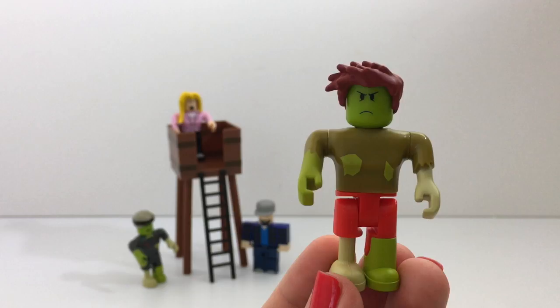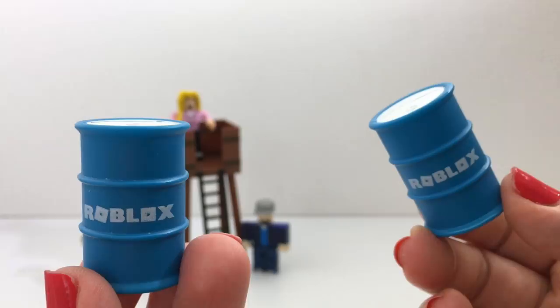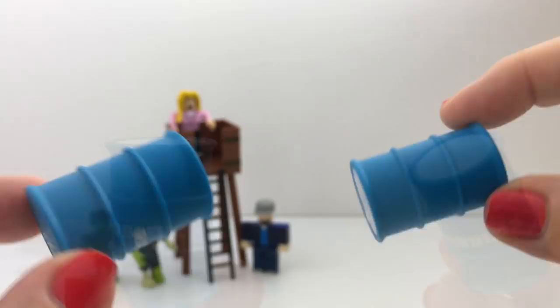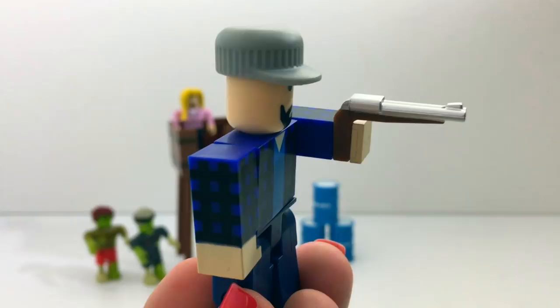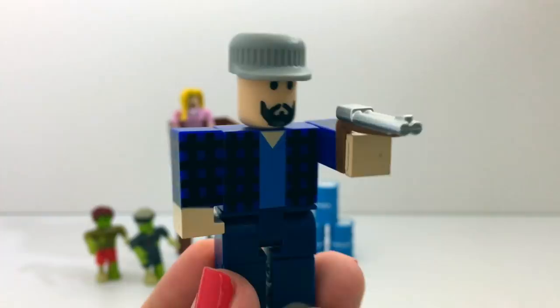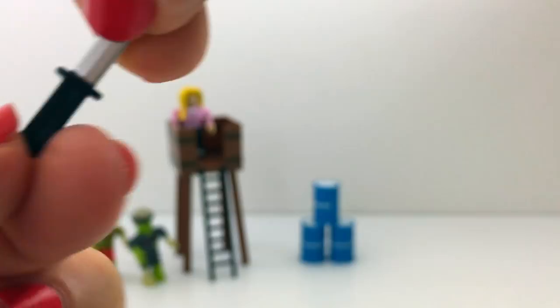So it comes with three of these barrels, these oil drums. So the first accessory is the shotgun. And the second accessory is the knife. So I have to say I noticed that these accessories are very strong, very durable. They are not cheap. They are well made.